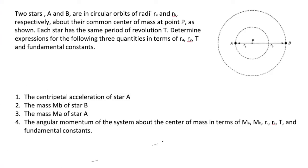We have four things to calculate today, so this could be a long one. The centripetal acceleration of star A, the mass MB of star B, the mass MA of star A, and the angular momentum of the system about the center in terms of everything else that we've already calculated.